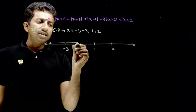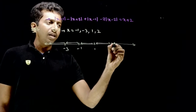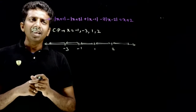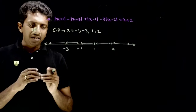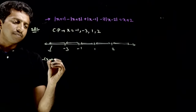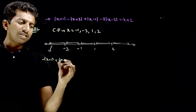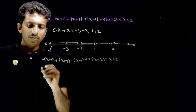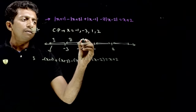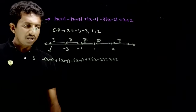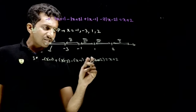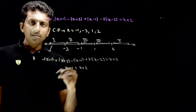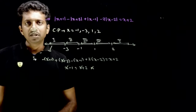First, let us solve in the first interval: x less than -3. If x is less than -3, then each and every expression inside the mod is negative. So the equation becomes: -(x+1) + (x+3) - (x-1) + 2(x-2) = x+2. Simplifying, minus x and plus 2x give x; constants: -1+3+2+3-4 = -1+2, so x-1 = x+2. Cancelling x, we get -1 = 2, which means there is no solution in the first interval.